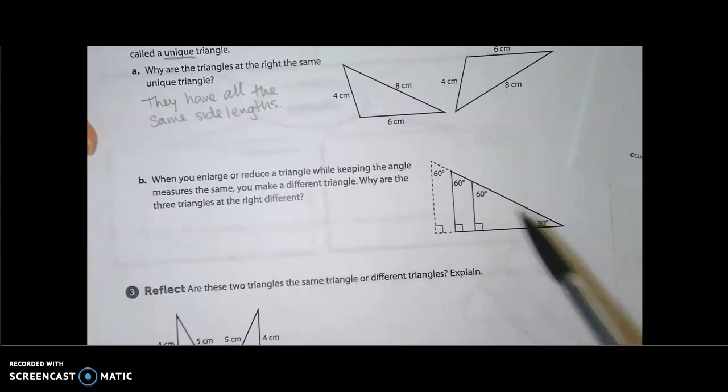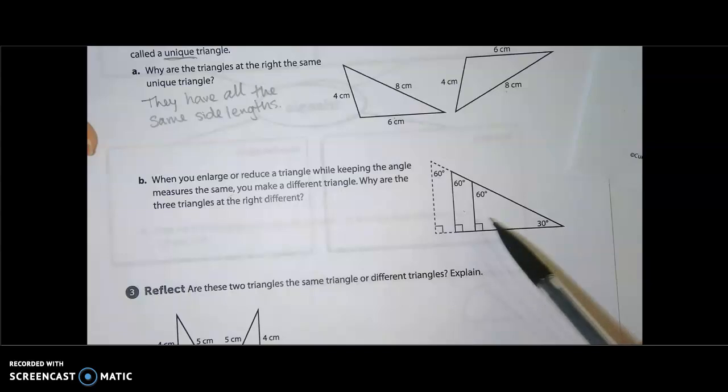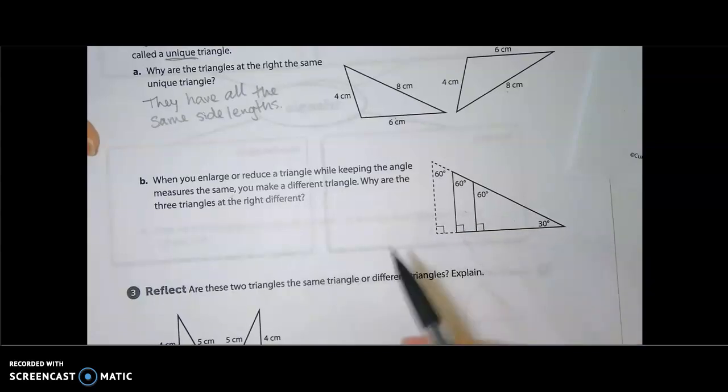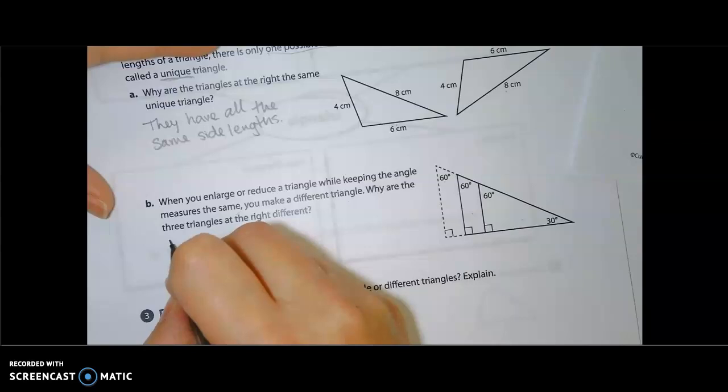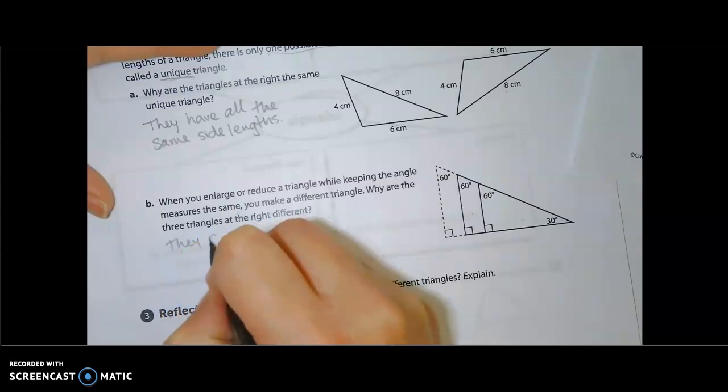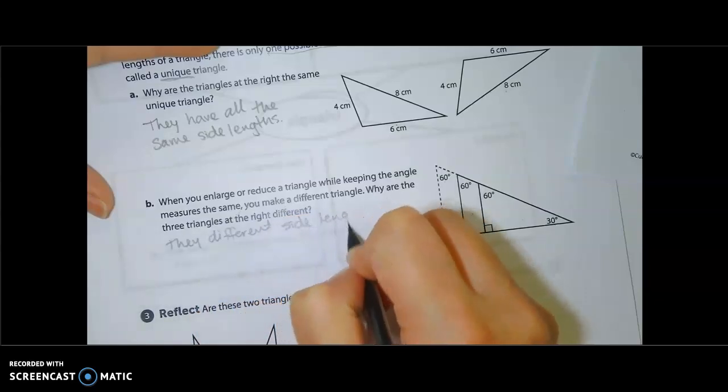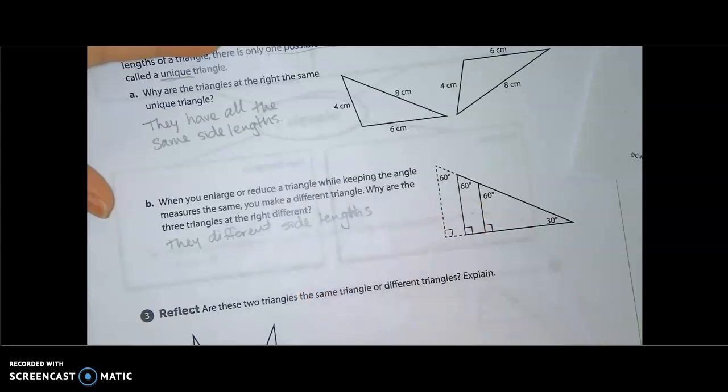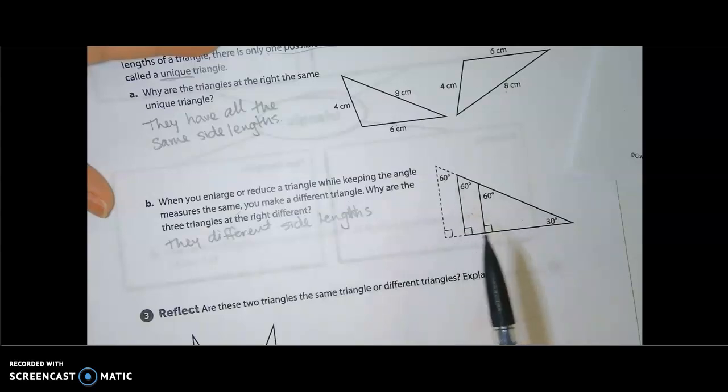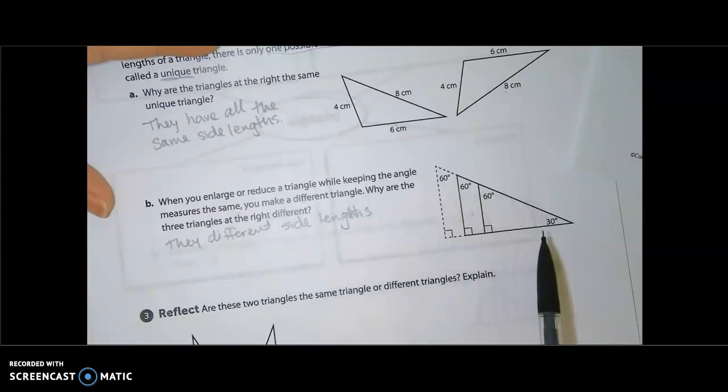But our side lengths keep getting bigger, or if the middle one was our beginning one, then one got smaller, one got bigger. So why are the three triangles at the right different? They have different side lengths. So we can have the same angle measures, but we're not guaranteed the same side lengths. Notice that they put these triangles all on top of each other. I can still see three distinct triangles.